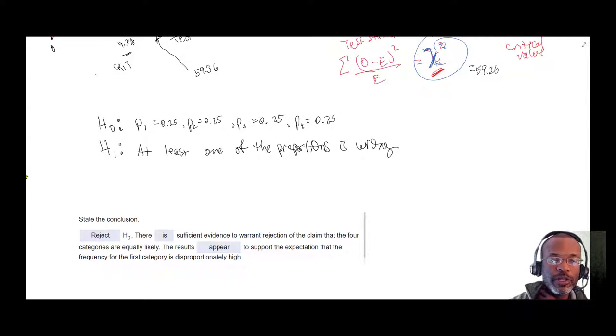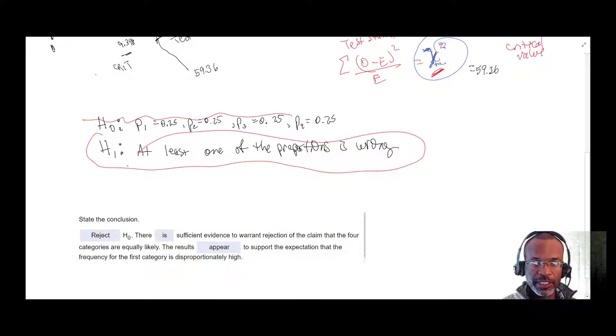So when you reject the null hypothesis, there's evidence to support that at least one of the proportions is wrong, or there's insufficient evidence to support the claim, the null hypothesis, that all the proportions are the same. And so you see this statement down here: the results appear to support the expectation that the frequency for the first category is disproportionately high.